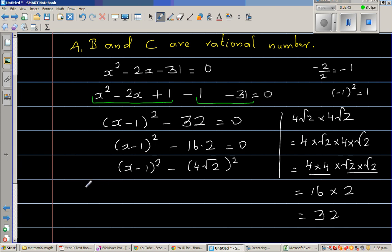So basically, 4 root 2 the whole squared is nothing but 32. So now I can use difference of 2 squared. So this is x equal to 0, of course. So this is x minus 1 minus 4 root 2 and x minus 1 plus 4 root 2 is equal to 0.